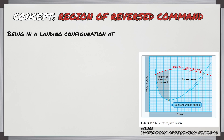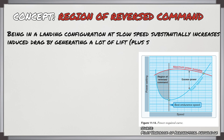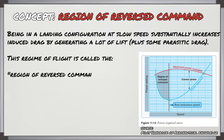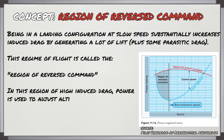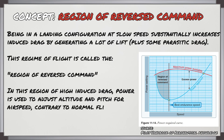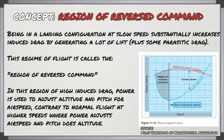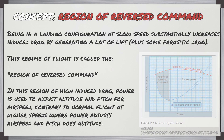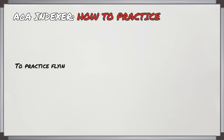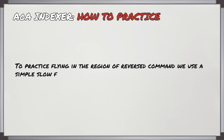When you're flying by the indexer, you're going to be in a landing configuration at slow speed, which means you've got an increased amount of induced drag because you're generating a lot of lift. This regime of flight is called the region of reverse command. In this region of high induced drag, your power is going to be used to adjust your altitude and you're going to be pitching for airspeed — the opposite of normal flight where power adjusts airspeed and pitch adjusts altitude. You can practice this by using a slow flight exercise, which we'll look at now.